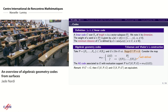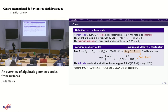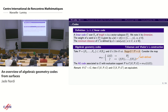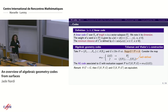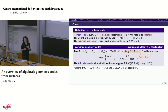Using the Goppa-Vladut construction, to define an AG code I need a set P of n rational points of the variety and a divisor whose support does not meet P. I consider an evaluation map taking elements in L(G) and forming a vector of length n where each coordinate is the evaluation of f at each point. The AG code is the image of L(G) under this evaluation map. Linearly equivalent divisors give Hamming-equivalent codes.